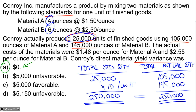We don't even have to calculate the weighted average standard price of the standard mix. All the information about standard price and actual price was unnecessary. If the question had asked about the mix variance, yes, we would have had to do more calculations. But the question was about the yield variance, and since the actual total quantity and the standard total quantity were the same, the answer is zero — there was no yield variance for Conroy.